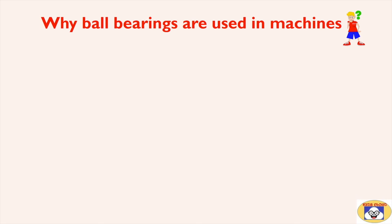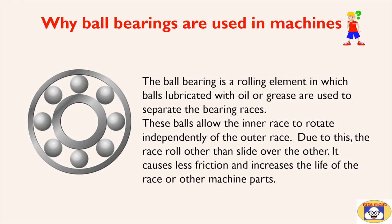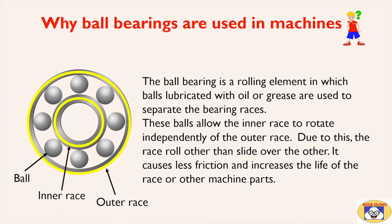Have you heard about ball bearings? Why are ball bearings used in machines? This is an example of rolling friction. The ball bearing is a rolling element in which balls lubricated with oil or grease are used to separate the bearing races. These balls allow the inner race to rotate independently of the outer race. Due to this, the races roll rather than slide over each other, causing less friction and increasing the life of the races and other machine parts.